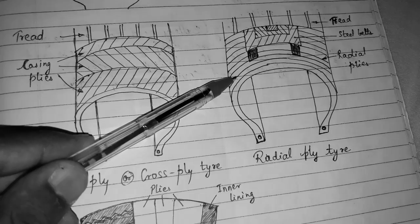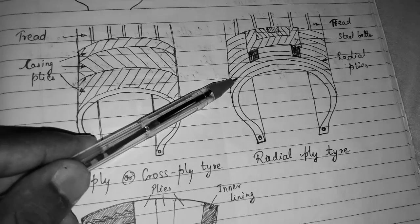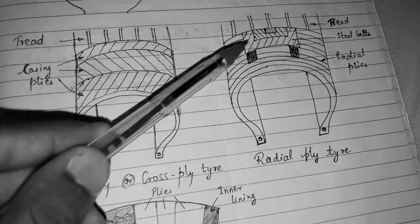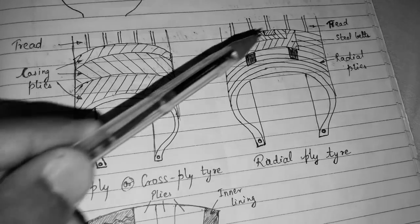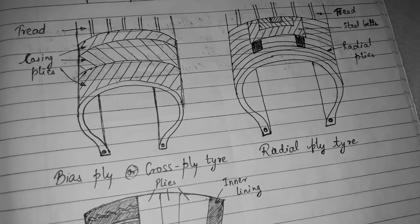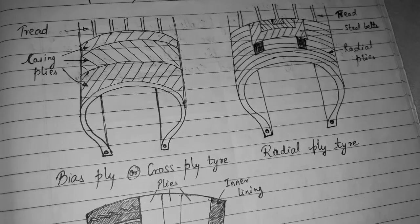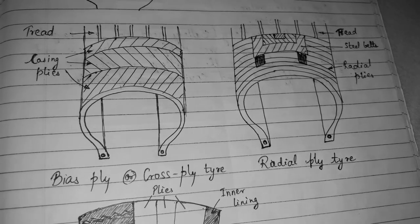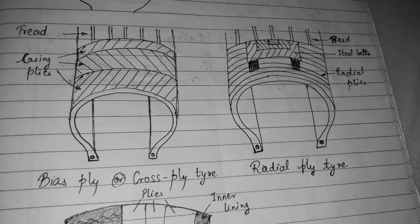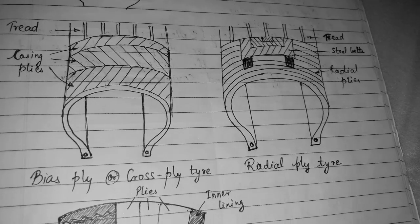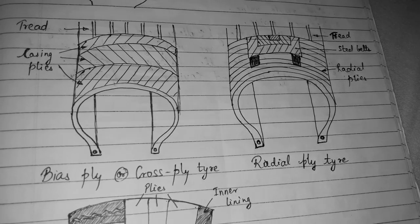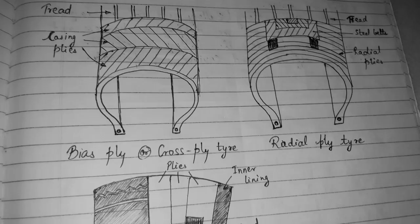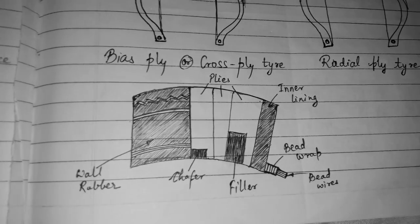For the radial ply tire, the plies of the cord run radially from bead to bead. In the radial ply tire you can also see the steel belt.